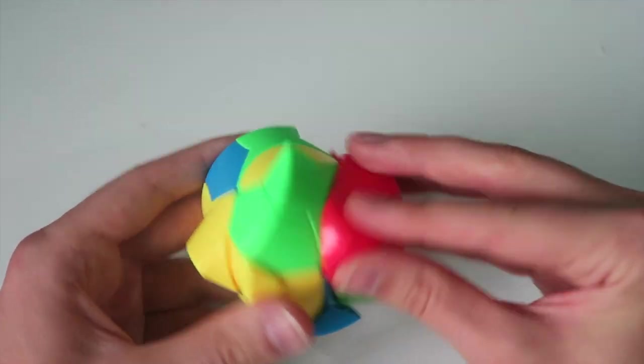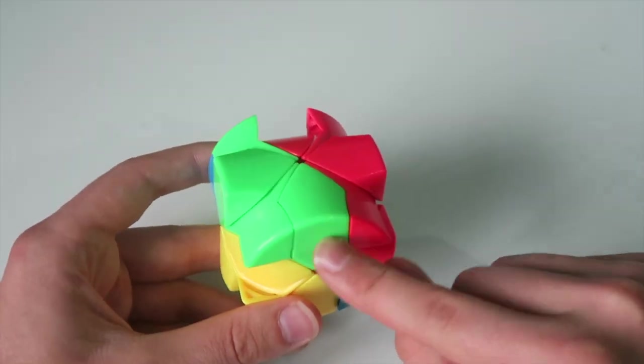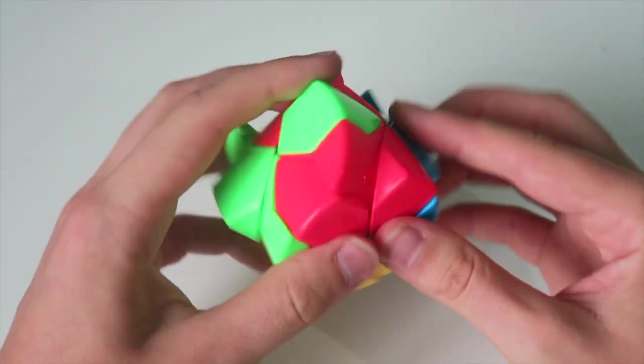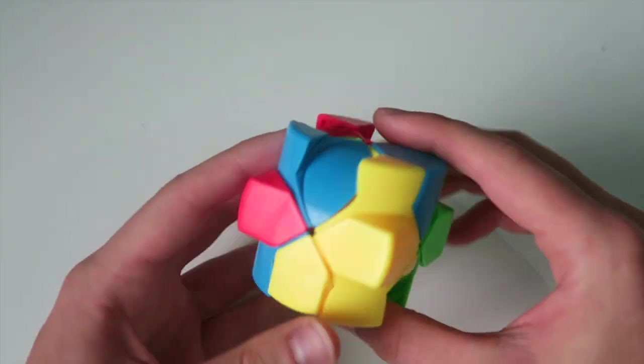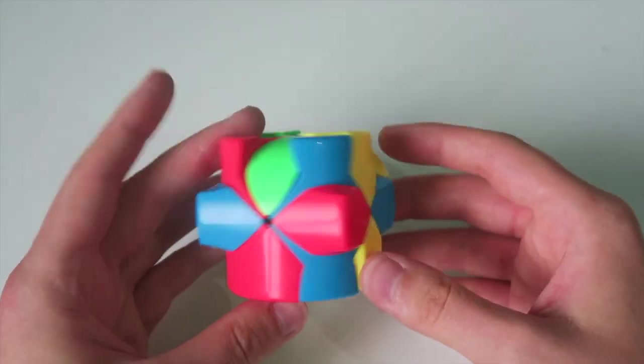I'm gonna start by just popping this guy in, this is a nice green edge here. Next up I'm gonna put the red one in. The whole point of the ready cube is that you can solve it very easily using just sledgehammer moves, so it's pretty straightforward.